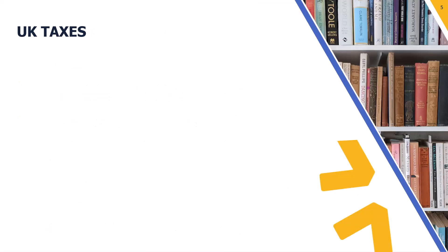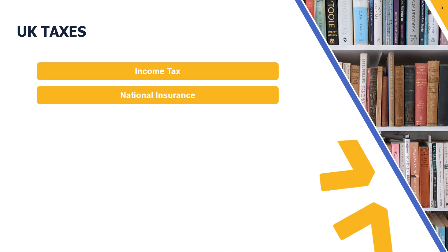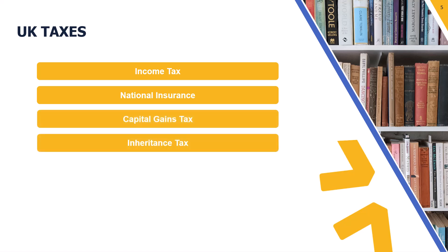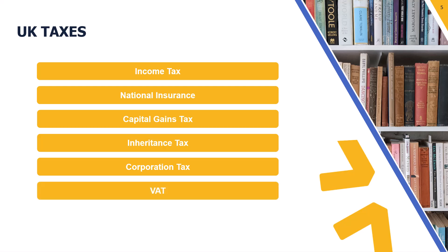There are seven taxes within the UK tax system: income tax, national insurance, capital gains tax, inheritance tax, corporation tax, VAT, and stamp duty. The first six are included within our UK tax syllabus. Stamp duty isn't, but it is included here for completeness — and for those who want to go on and study advanced tax, stamp duty features in that syllabus as well.